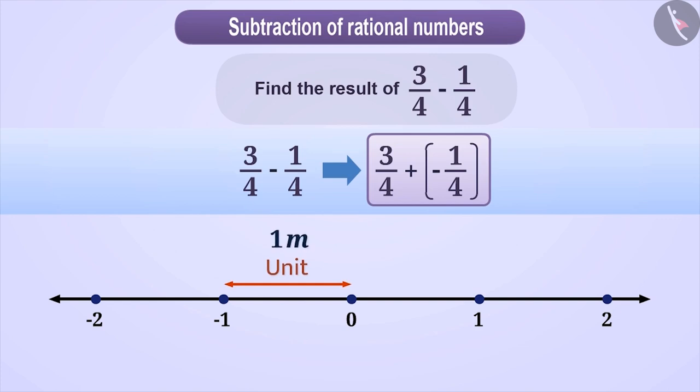Now here we see that both the rational numbers have denominator 4. From the denominator, we get to know that each unit should be divided into 4 equal parts. So,